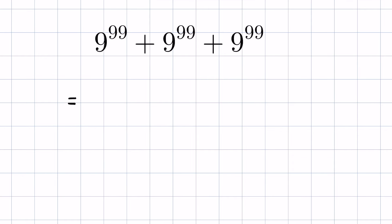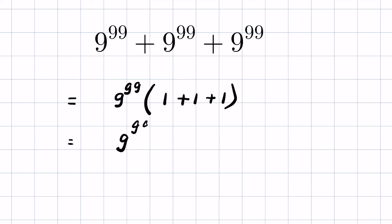Here we can take 9 raised to the power 99 as common and write it as 9 raised to the power 99, parenthesis 1 plus 1 plus 1, or 9 raised to the power 99 times 3.